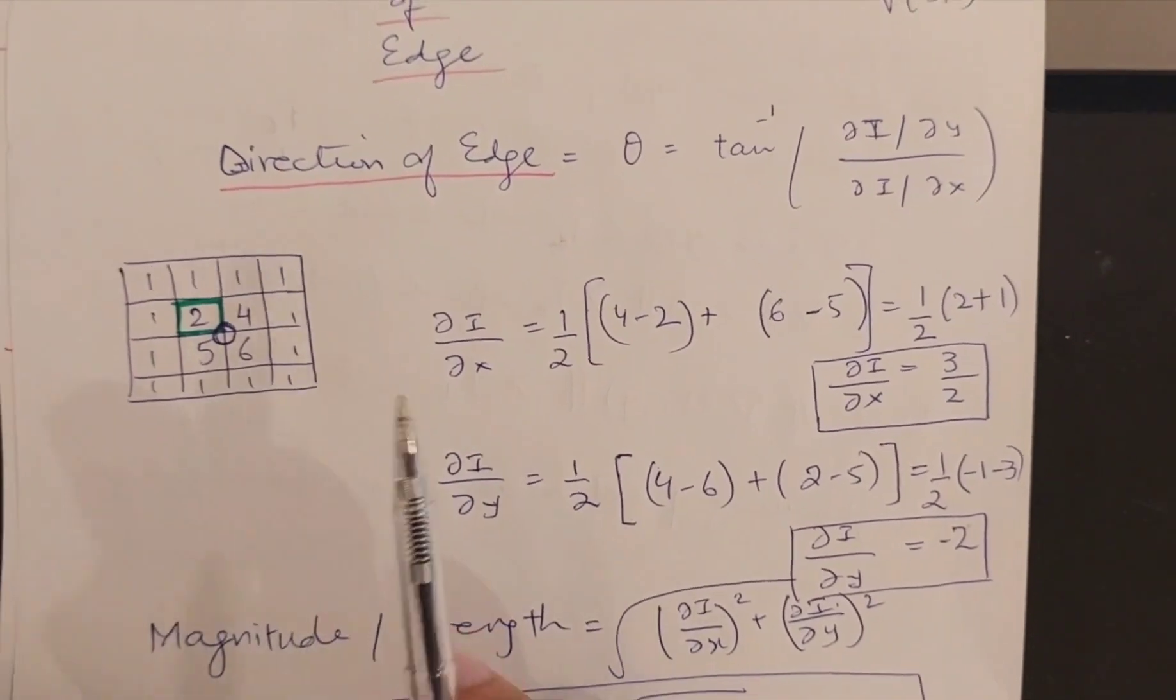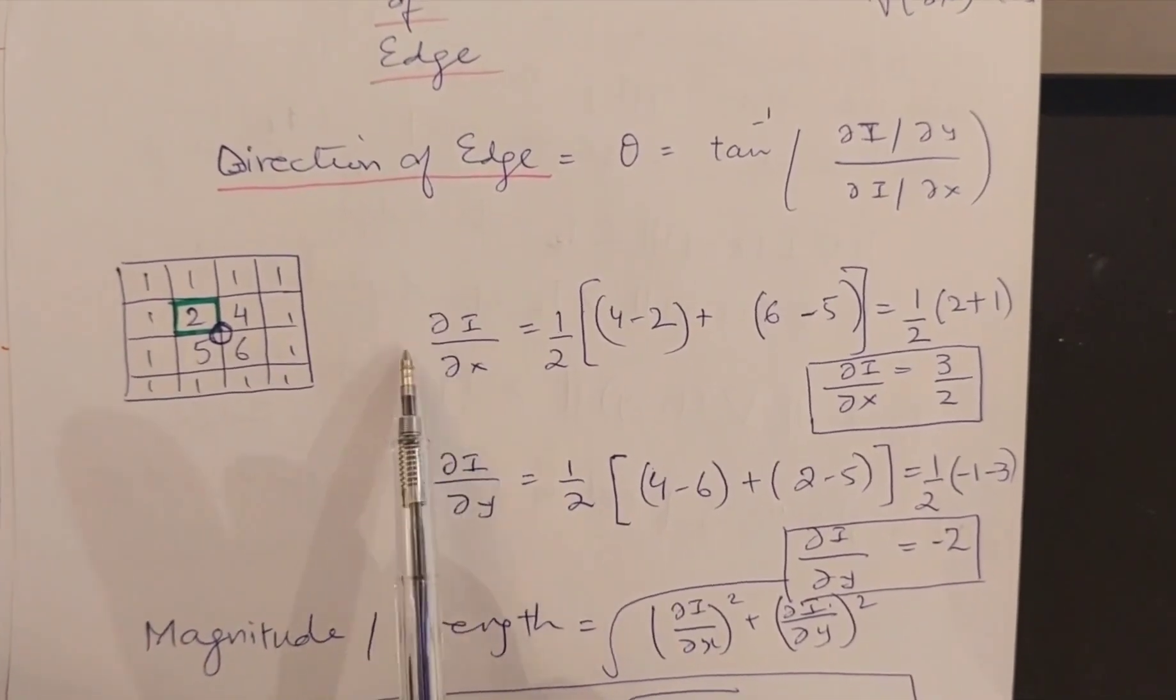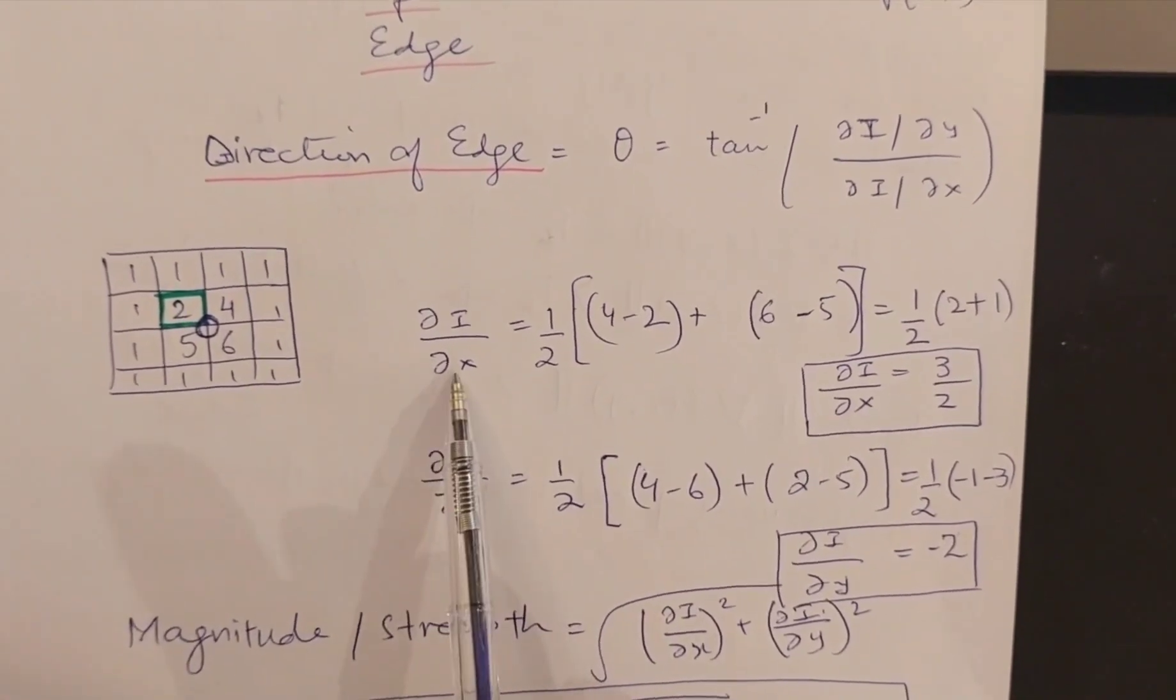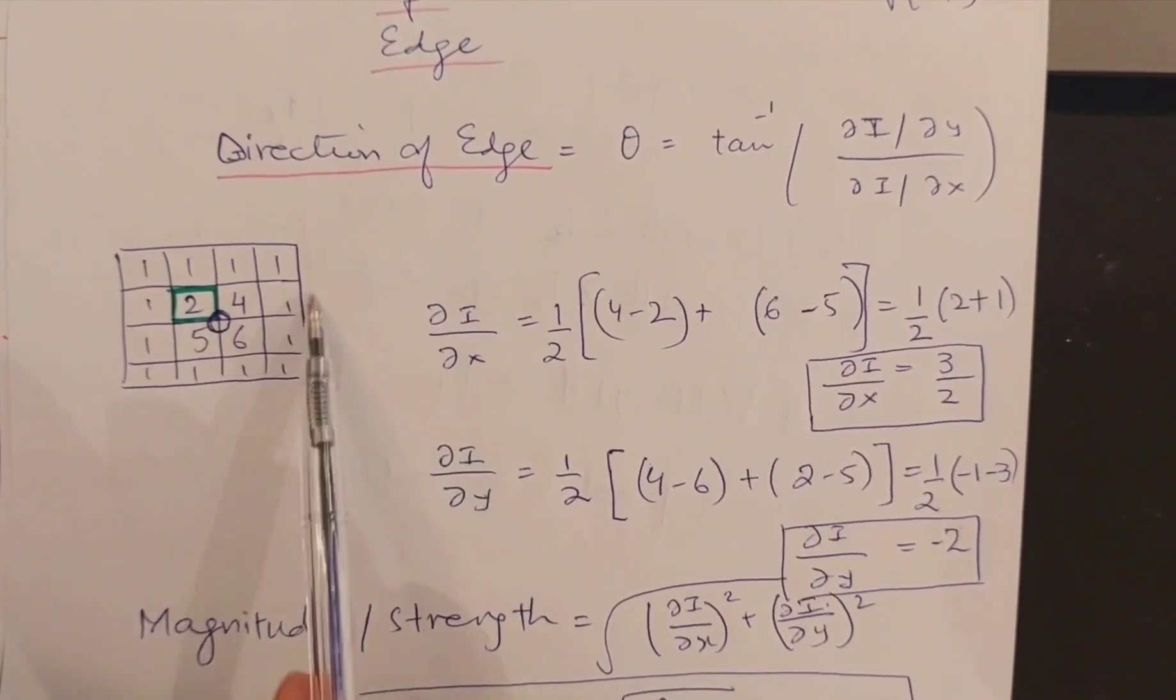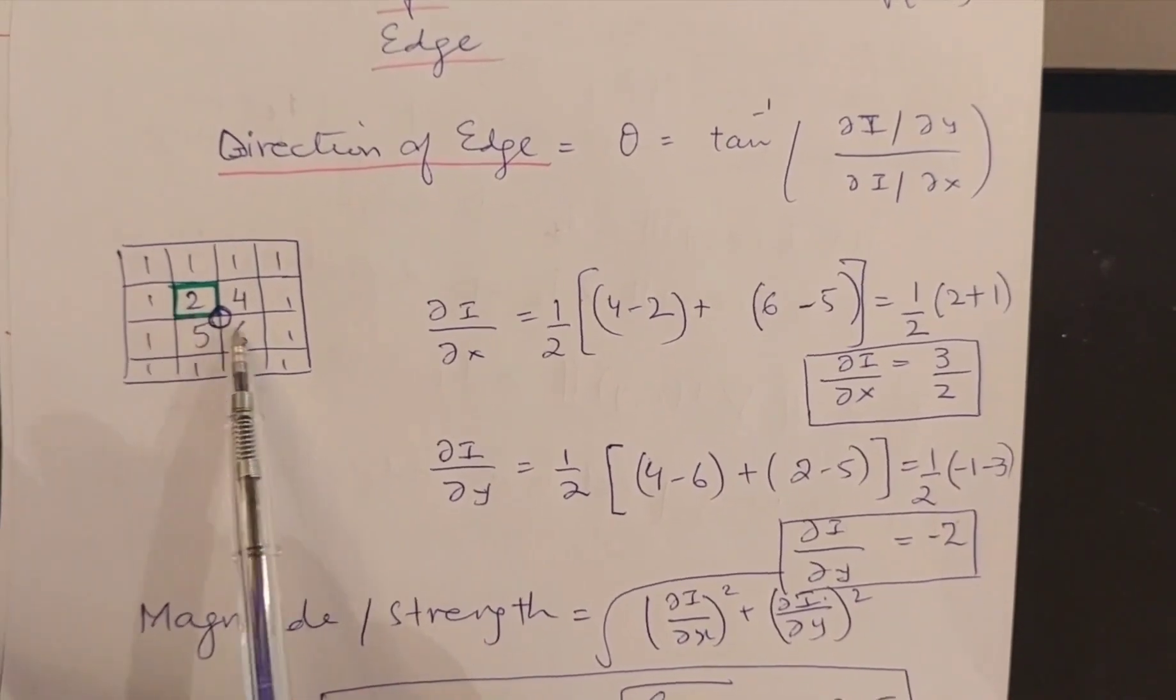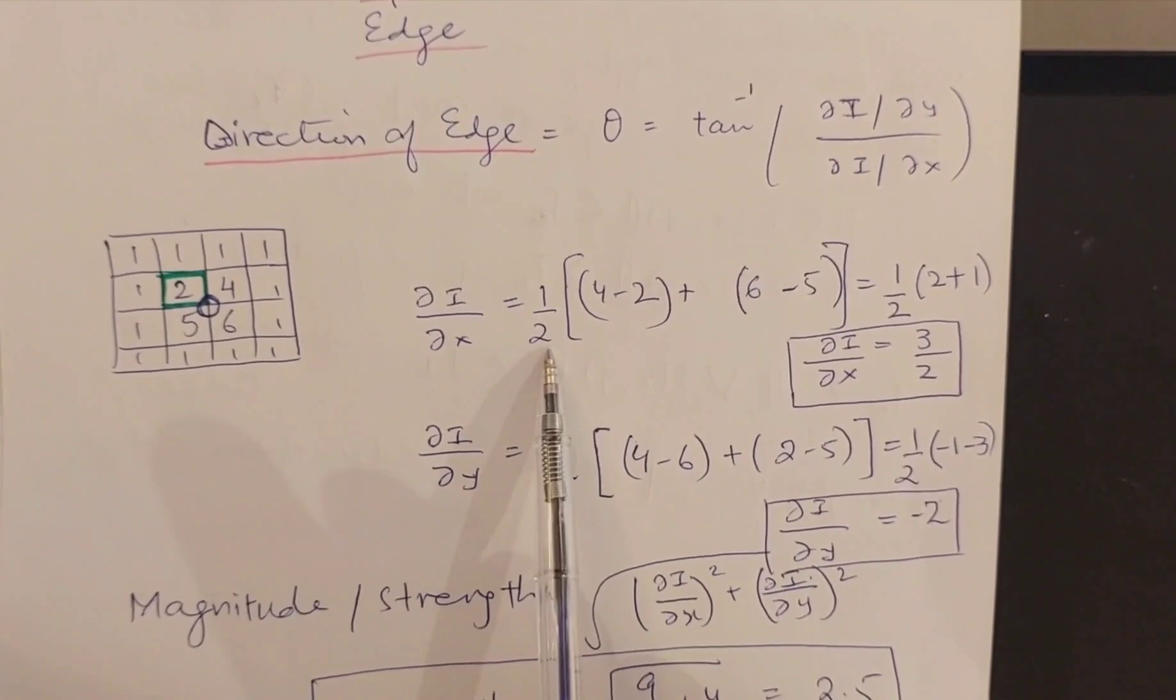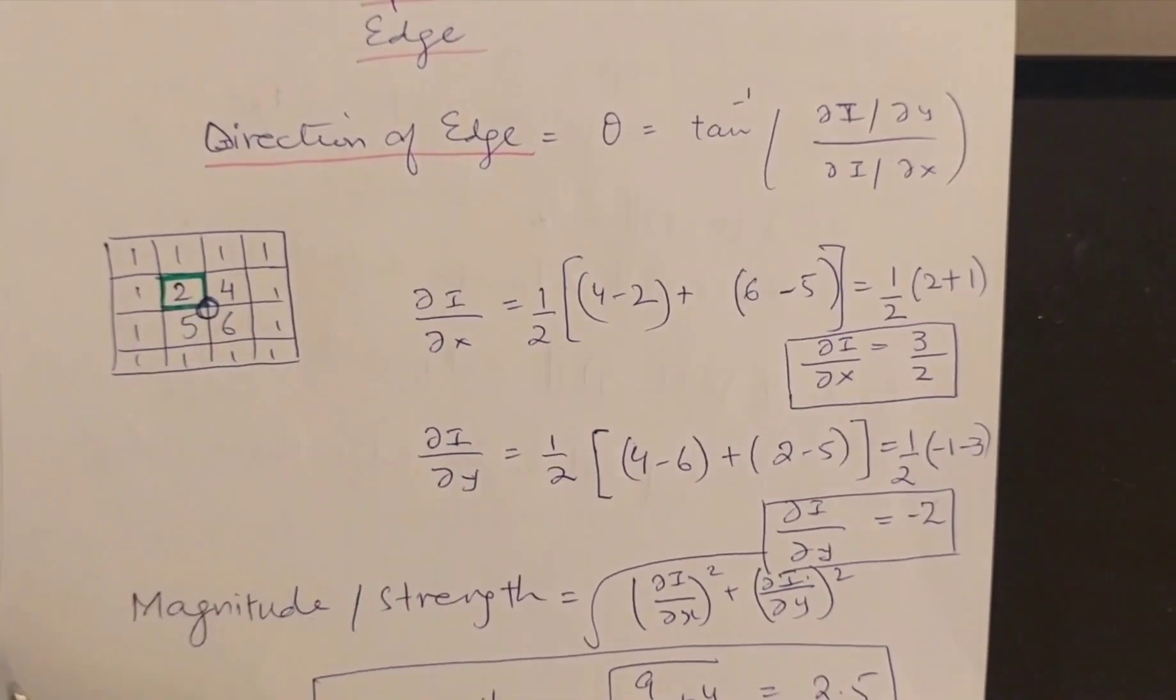If I want to find this x derivative, I will do 4 minus 2, 6 minus 5, and I will sum them up and divide by 2, because I am taking 2 pixels at a time. It is coming to be 3 over 2.